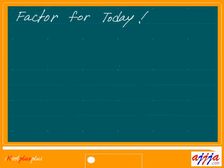So next time somebody asks you — like your girlfriend, boyfriend — or they ask you, like, do you love me? Then your answer is no. Hey, you can say: negative — negative 1. That means you can say maybe like this: i squared. That means — look at this, beautiful, right? So that means negative 1.